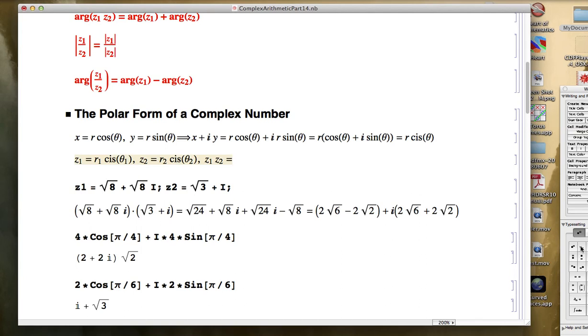The modulus of z1 is r1, and the modulus of z2 is r2. And you add the arguments.